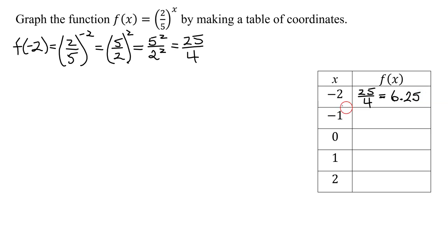Now let's evaluate f when x is negative one. f of negative one is just two-fifths raised to the x power. x is negative one, so it's two-fifths to the negative one exponent. That is the reciprocal five-halves raised to the positive one exponent, which is just five-halves. So f of negative one is just five-halves, and when we graph it, we want to use the decimal equivalent, which is 2.5.